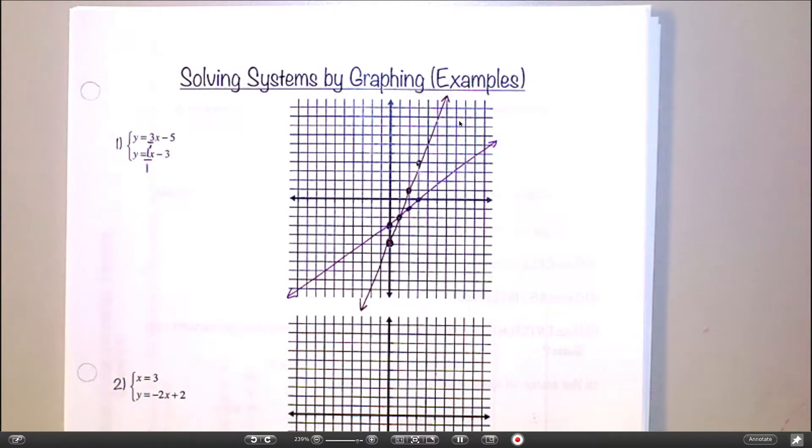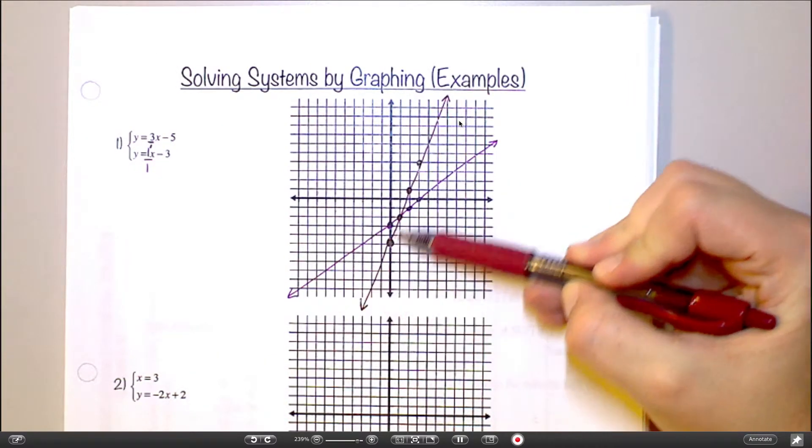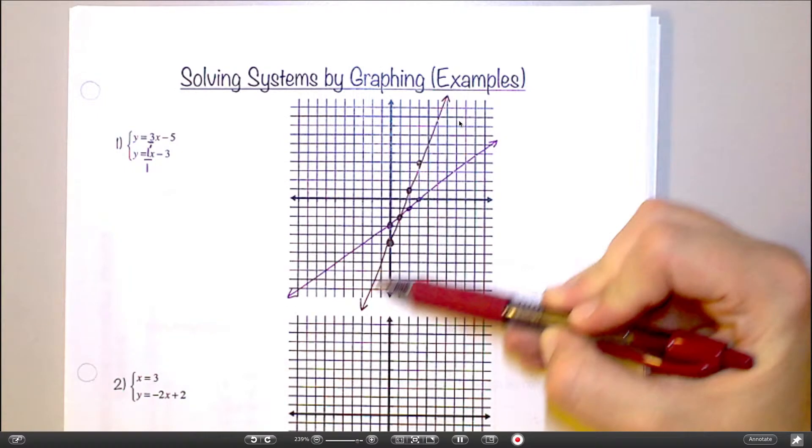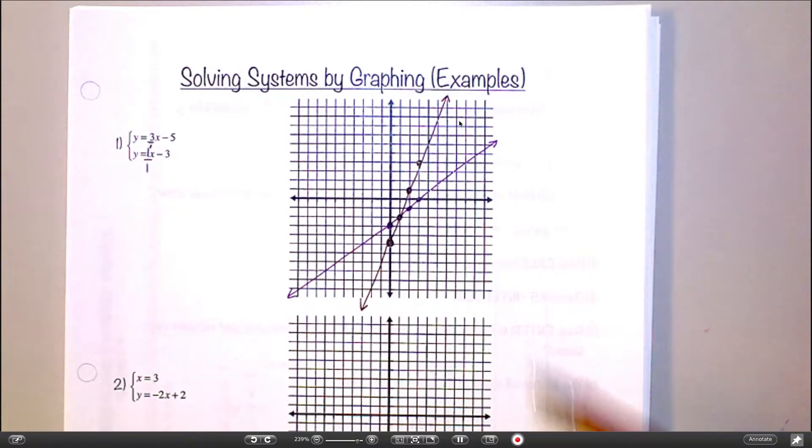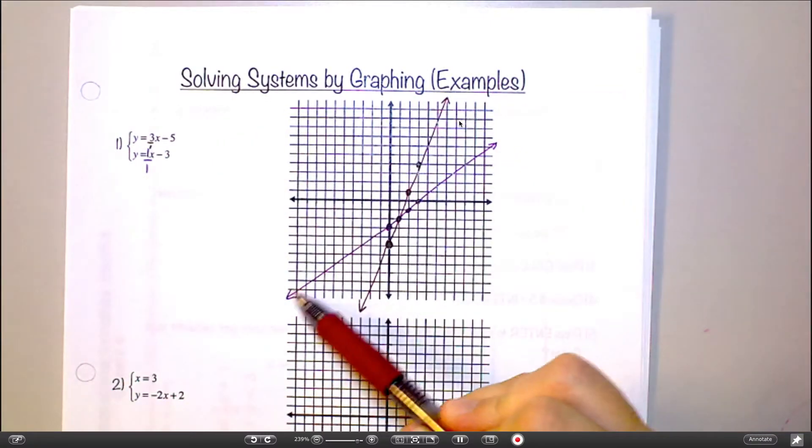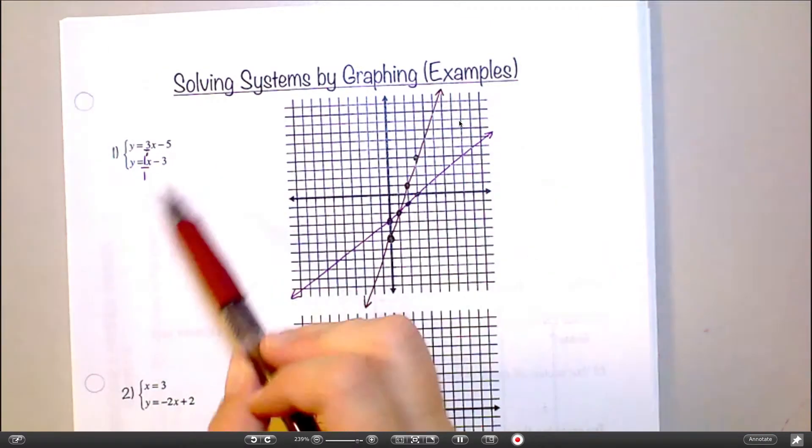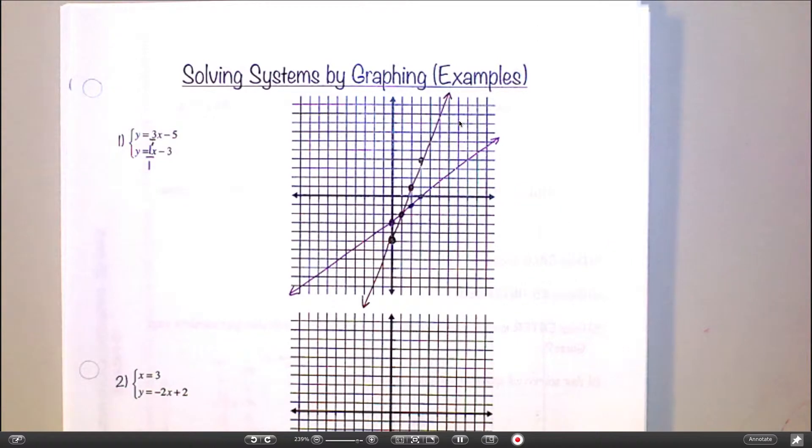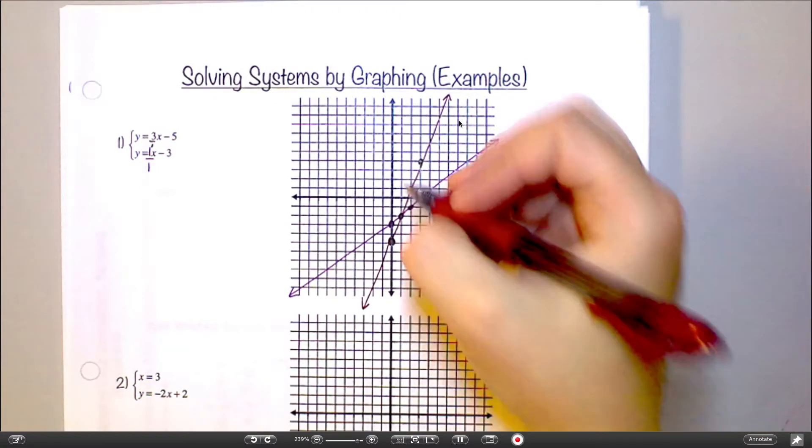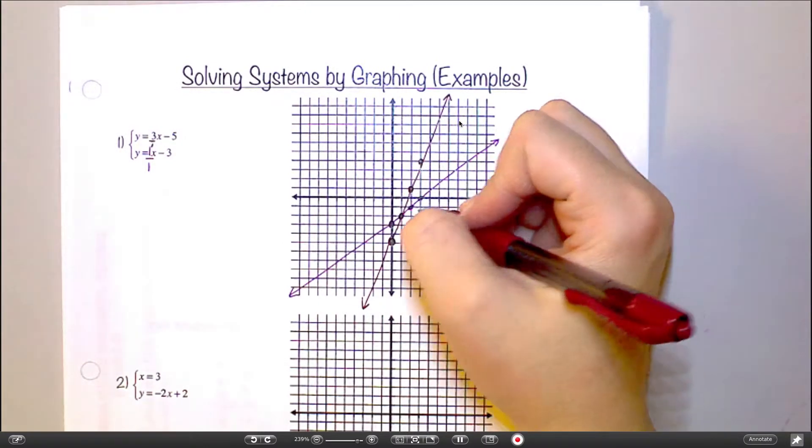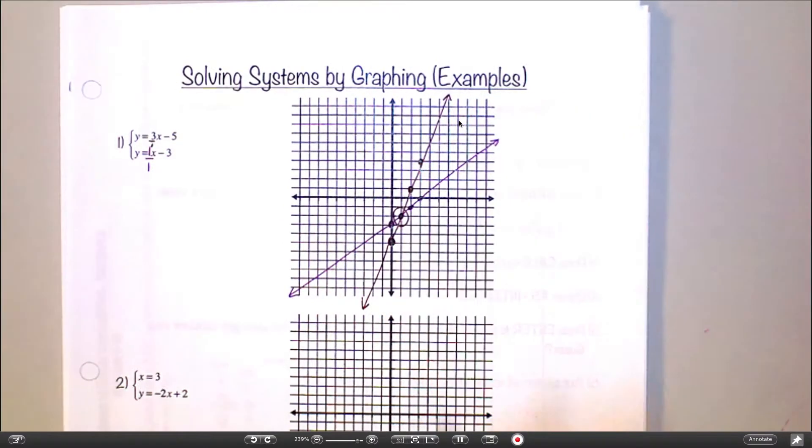Okay. So all of the dots on this line, even the dots I didn't draw in, all of the dots on this line represent the solutions to this equation. And all of the dots on this purple line represent the solutions to that equation. Where could I find one solution that works for both equations? Say it again? One that touches both of the lines. Okay. So where would that be on this graph? 1 negative 3. Yeah. It's this right. Not 1 negative 3. 1 negative 2. Yeah. This one. It's the point where they intersect.